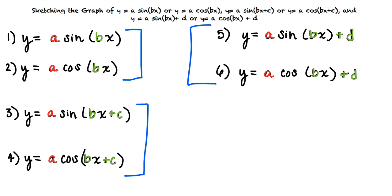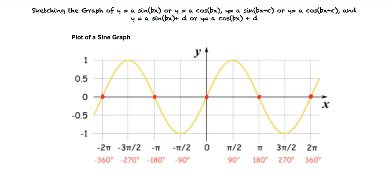To start sketching the graph of any of these functions, we will start with the general graph of either sine or cosine. Here we can see the sine graph crossing the x-axis at negative two pi, negative pi, zero, pi, and two pi.